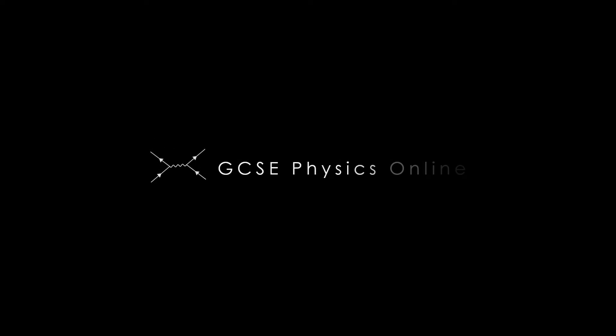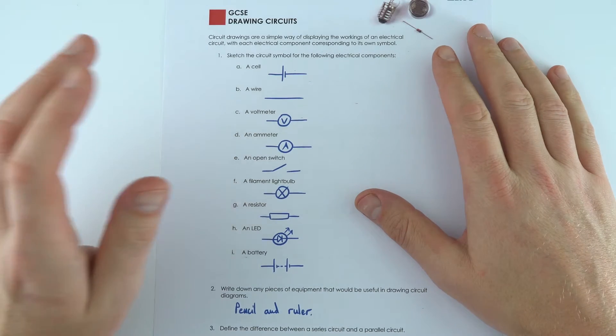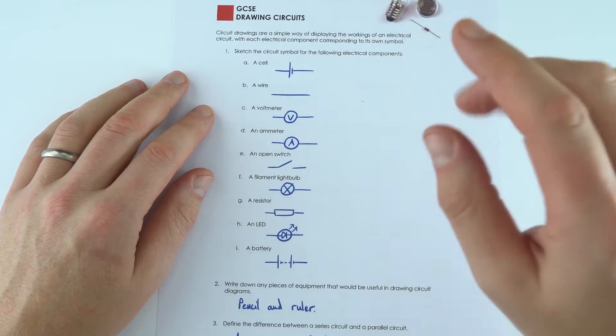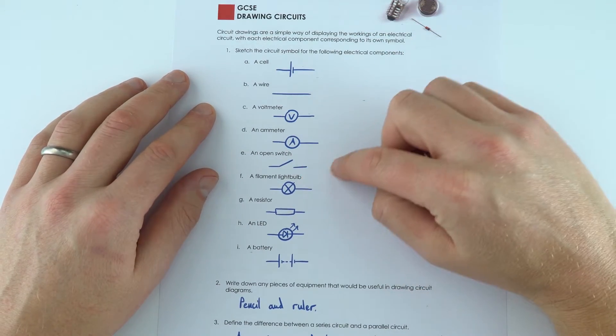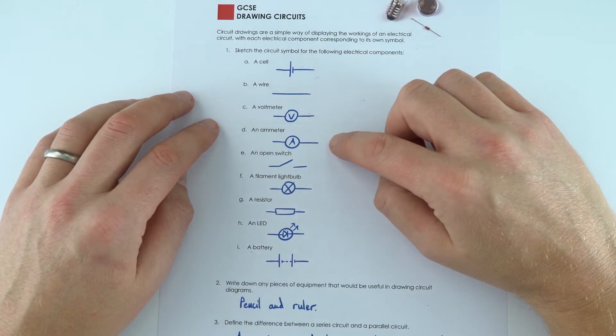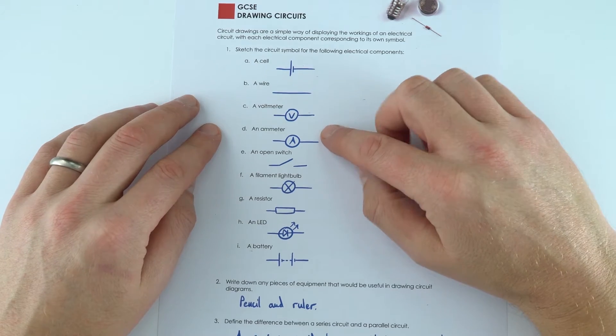Now drawing circuits and understanding what things represent is really important when it comes to looking at GCSE electricity. We've got some of the common circuit symbols here that you should be familiar with, a lot of them from before you did your GCSEs.